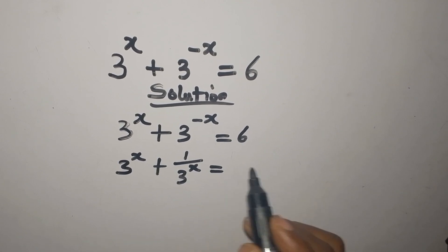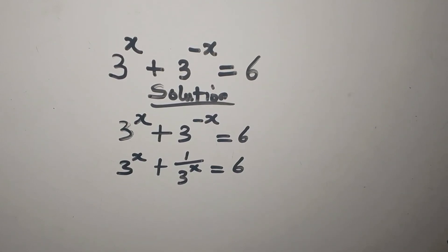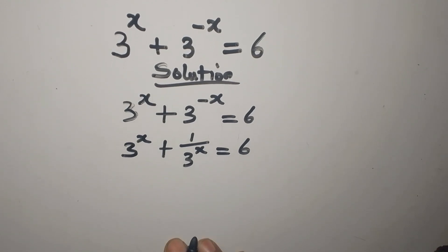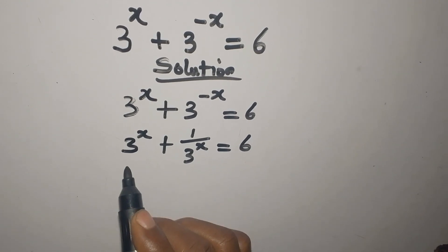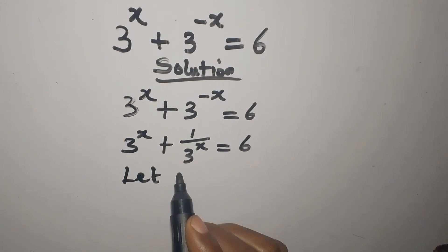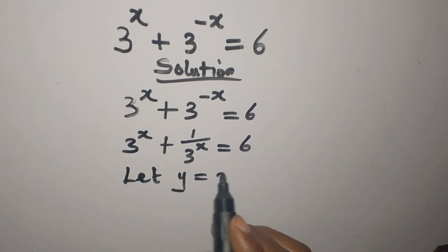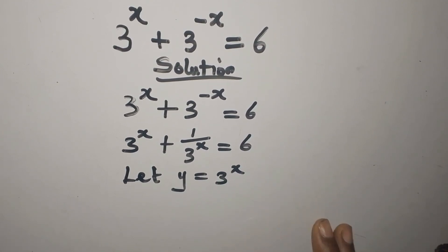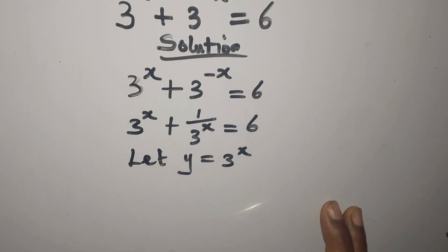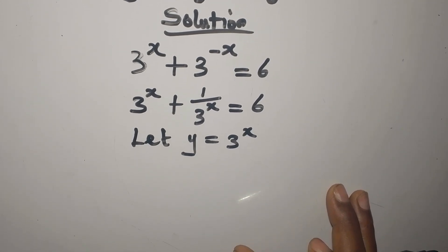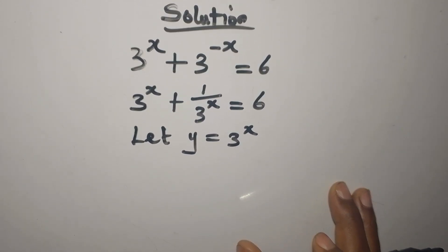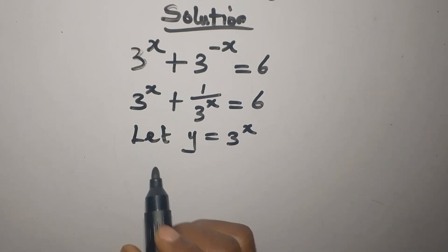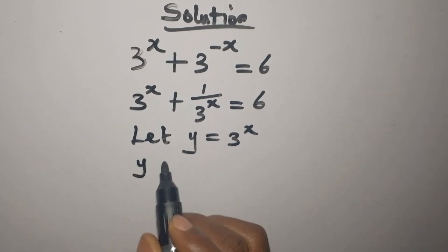This is equal to 6. Now, what do I do from here? Let Y be equal to 3 to the power of X. So anywhere I see 3 to the power of X, I will write Y. Here we are going to have Y plus...